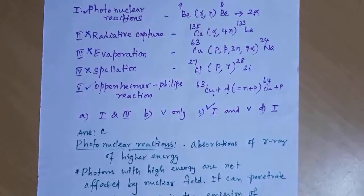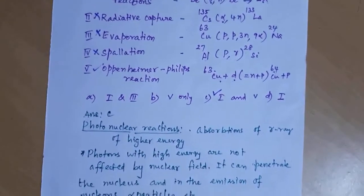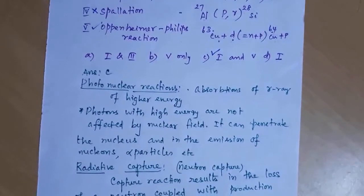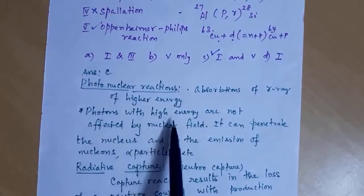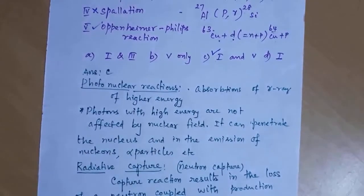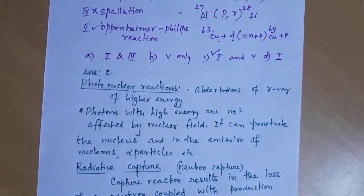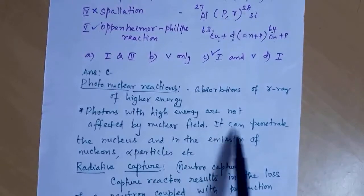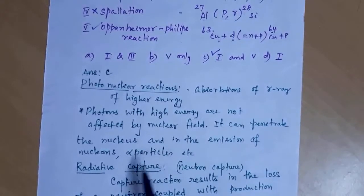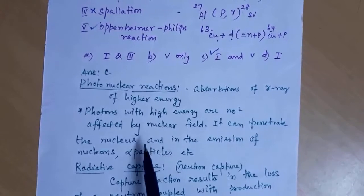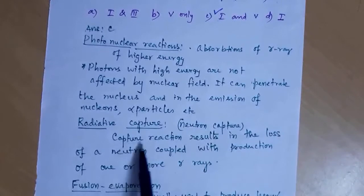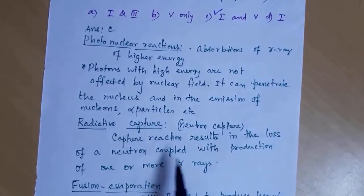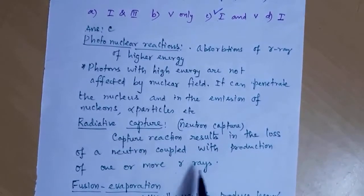Let us see each nuclear reaction in detail. Photonuclear reactions involve the absorption of gamma rays of higher energy. Photons with high energy can penetrate the nucleus, resulting in the emission of nucleons and alpha particles. Radiative capture is neutron capture: the capture reaction results in the loss of a neutron coupled with the production of one or more gamma rays.